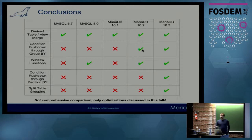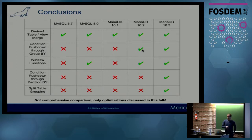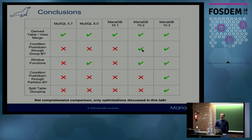To summarize which features are available where: derived table and view merge is available in all stable versions of MySQL and MariaDB. Condition pushdown is a MariaDB-only feature. Window functions are coming in MySQL 8.0, and merge likely works with CTEs in MySQL too. Condition pushdown for PARTITION BY and split table grouping are only available in MariaDB 10.3. We're hoping MySQL can also implement these, because more users getting optimizations is better for everybody.